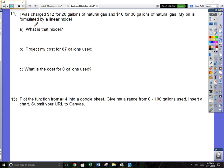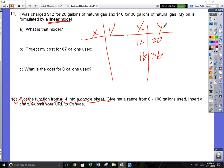Problem 14 is going to be a linear model. I was charged $12 for 20 gallons of natural gas and $16 for 36 gallons of natural gas. My bill is formulated by a linear model. Now the hard part is this: they give you two specific points of data. Do we want to go with 12 and 20, 16 and 36? Or do we want to reverse them and go 20, 12, 36 and 16? Which one of these is going to be the x? Which one is independent? Is the money independent or is the number of gallons used independent?